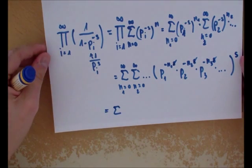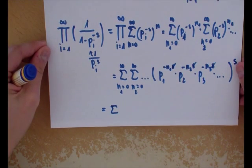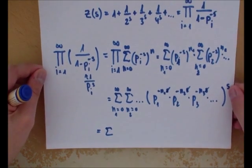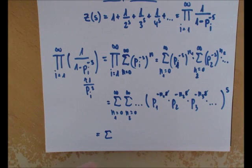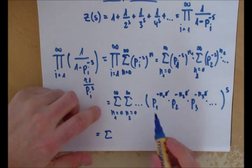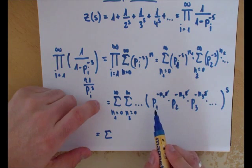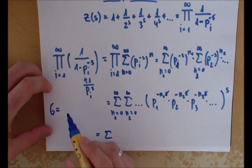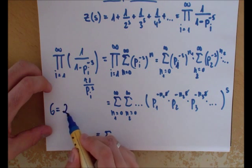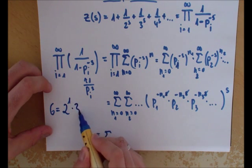This is just the way to factorize prime numbers. This is very important. You can take a number—I will do this here. For example, you have 6, you can rewrite this as 2 to the first power and 3 to the first power.